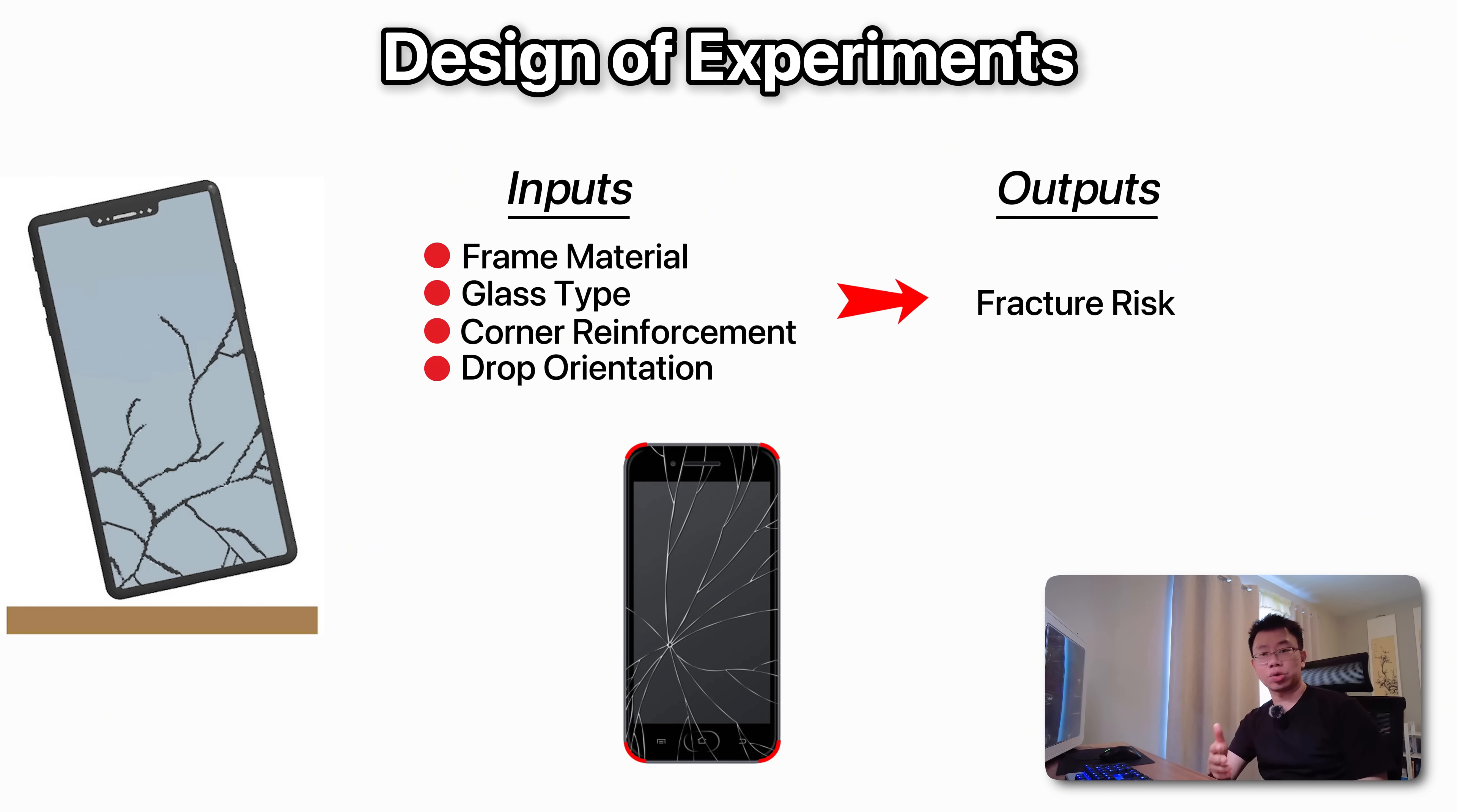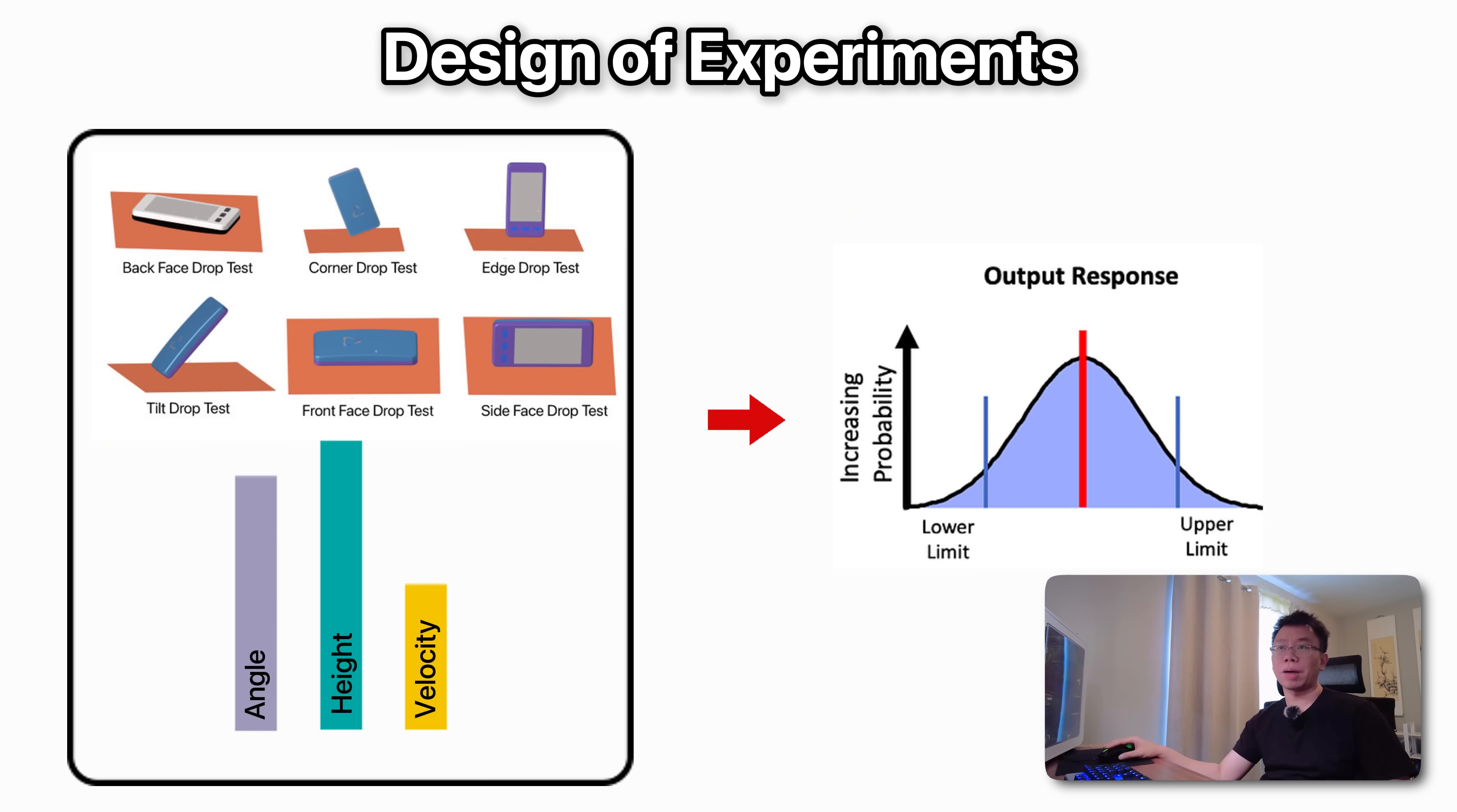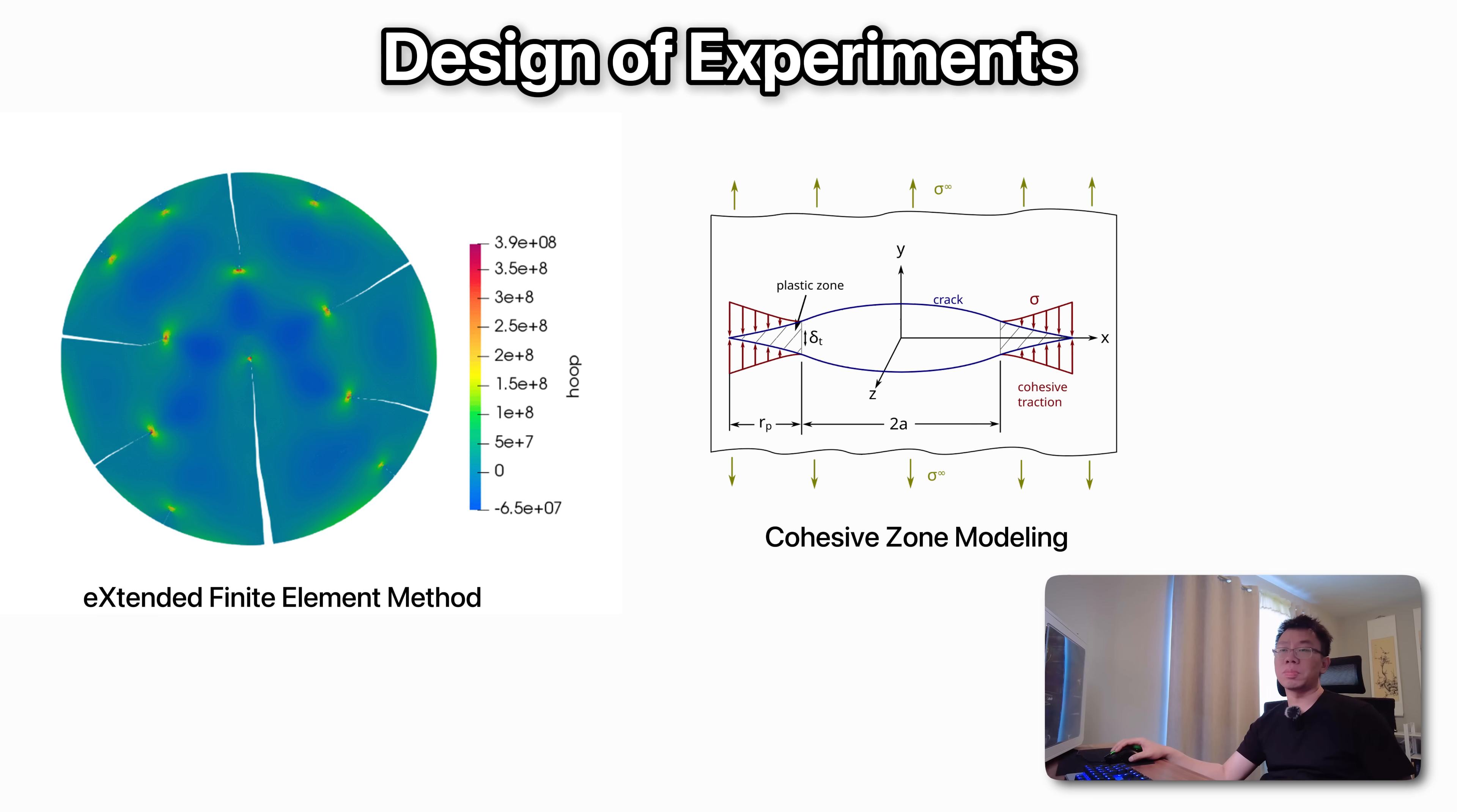So we can quantify fracture risk in two ways. First is probability of fracture. We can run multiple virtual drops with slight random variations in angle, height, and velocity. The fraction of simulations that result in cracking gives a statistical probability. Second is average crack area. Using finite element methods like XFEM or cohesive zone modeling we can track crack initiation and propagation and average across trials to measure severity. These metrics reveal real-world outcomes much better than just looking at stress alone.